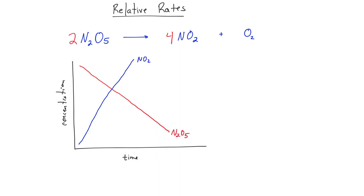If we look at oxygen, we know that O2 is going to be produced half as fast as N2O5 is used up. So the slope for oxygen is also going to be positive because it's being produced, but it's going to be much less steep than that of NO2.